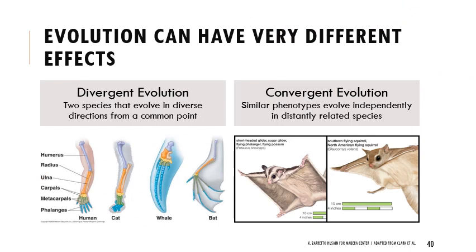Evolution can have very different effects. Divergent evolution is when two species evolve in very different directions from a common point. Convergent evolution is when similar appearances or traits evolve independently in very distantly related species. The sugar glider — a marsupial from Australia — and the flying squirrel from North America look very similar and both have wings for gliding from tree limb to tree limb, but they evolved those features completely independently. Bats, birds, and insects all fly but also evolved that ability separately from one another.